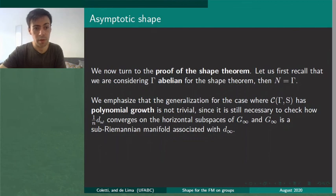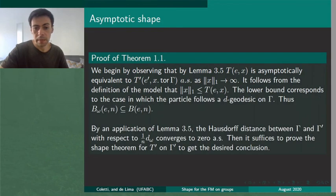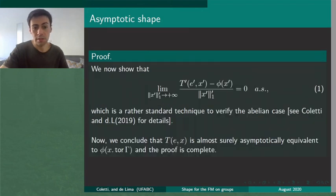Now we can turn to the proof of the shape theorem. We apply one of the previous lemmas to verify that T and T' are asymptotically equivalent. Then we also need to make sure that Γ' and T' satisfy all the upper and lower bounds. We can also verify that Γ' is isomorphic to Z^d so we just need to verify that T' and φ are asymptotically equivalent. And then we can conclude the proof of the theorem.